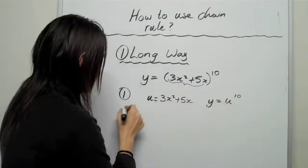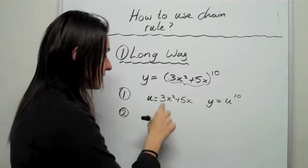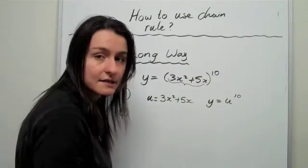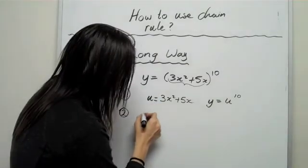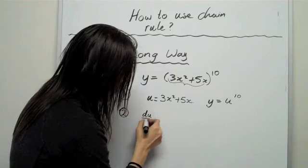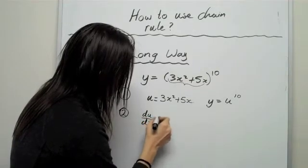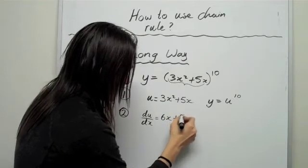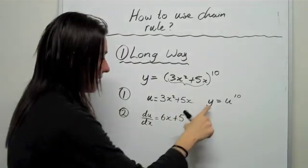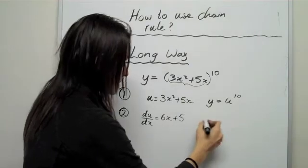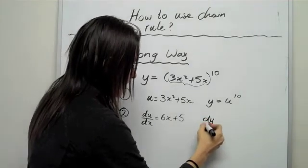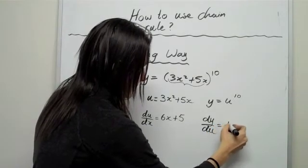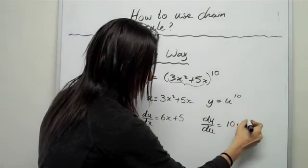So the second thing that we do is, we differentiate each of these. So we basically have, and you'll see why in a second, but you basically differentiate, so you go du over dx is going to be equal to 6x plus 5. And then we do the same to that, so we differentiate that.